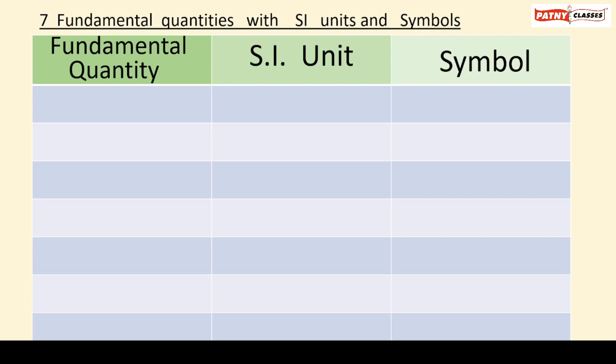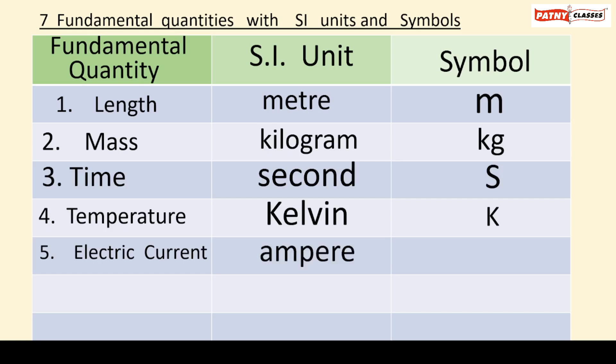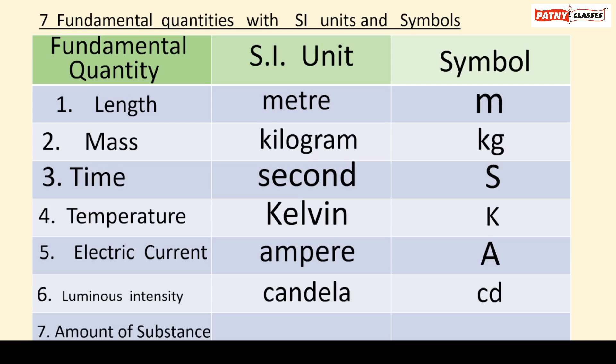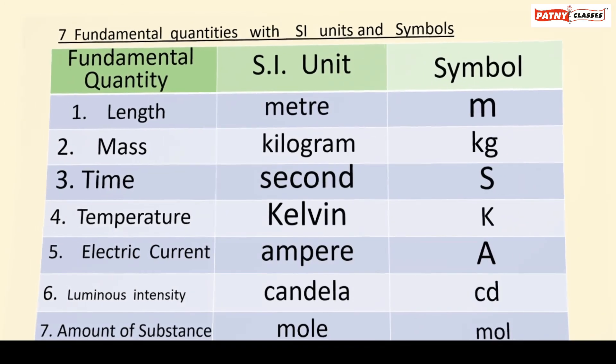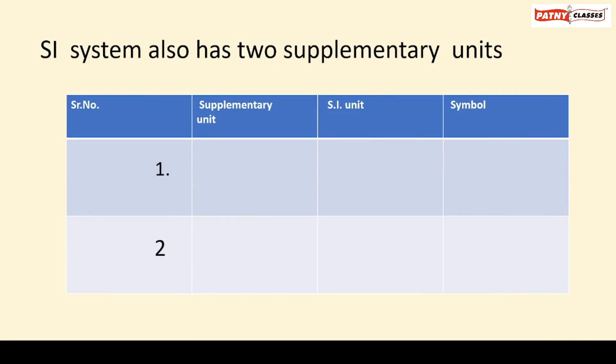Thus, the seven fundamental quantities under the SI system are length, mass, time, temperature, electric current, luminous intensity, and amount of substance. Now, apart from the seven fundamental quantities, there are two supplementary units used in the SI system. These two supplementary units are plane angle, whose SI unit is radian and symbol is rad, and solid angle, whose SI unit is steradian and symbol is sr.